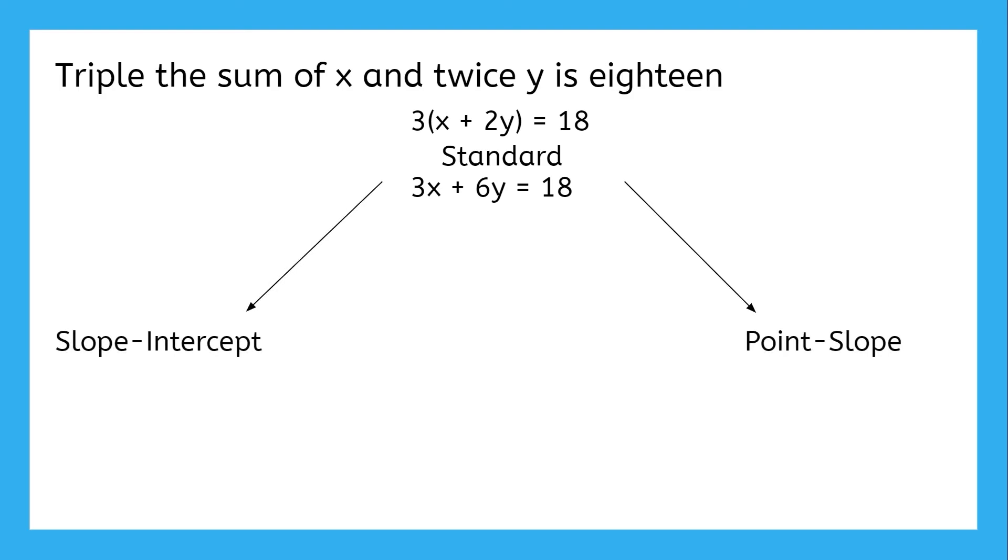We can convert this to either of the other forms. For slope-intercept, we need to isolate the y, so just subtract 3x to the other side and then divide by six. The slope-intercept form of this equation is y equals negative one-half x plus three.